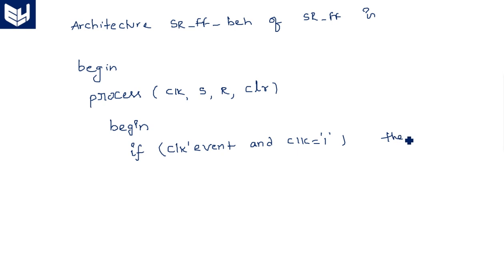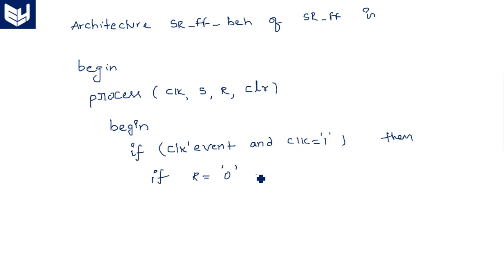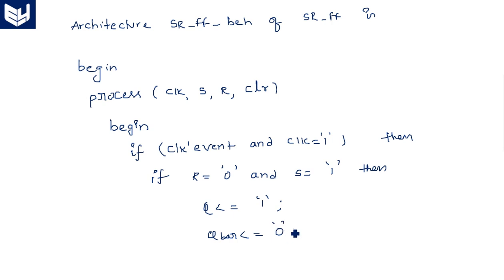The meaning of clock'event and clock = '1' is: on the clock signal, if any rising or falling edge occurs the state varies, but along with the event we also verify the direction. This line specifically means rising edge. Then inside, if R = '0' and S = '1' then output Q is assigned '1' and Q_bar is assigned '0' because both are complements of each other.